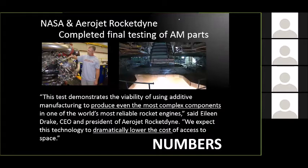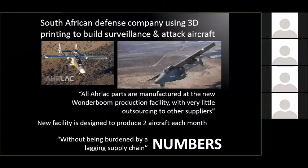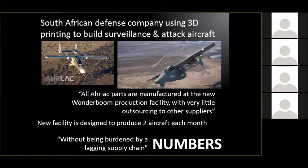The announcement by Aerodyne and NASA on the new engine they've developed with 3D printed parts includes quotes like, 'To produce even the most complex components, it's going to dramatically lower the cost of going to space.' Scotland — and I didn't even know Scotland had a space program — turns out not only do they, but they're actually using printing to launch equipment into space using additives. The Wonderboom production facility in South Africa claims they can produce two aircraft a month, with what they describe as liquid outsourcing without being burdened by a lagging supply chain — and that speaks tremendous volumes.